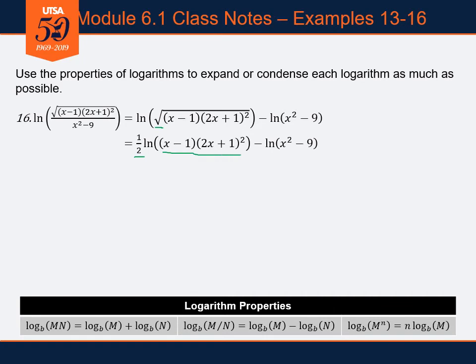What I see now in that first natural logarithm is a product: x minus one times two x plus one squared. Let's split that up into a sum of two separate logarithms: the natural log of x minus one plus the natural log of two x plus one squared. It's important to just do one rule at a time, one instance of the rule at a time — take it as slow as we need to, do one step at a time, and be careful as we go through each step.